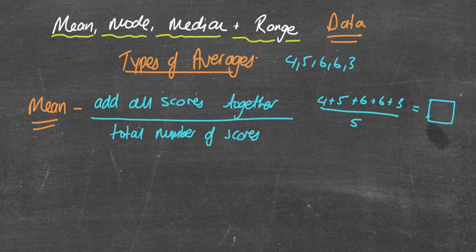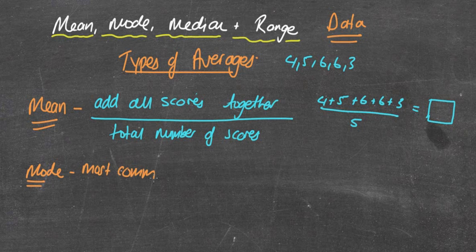But certainly these are all types of averages. The mode is the most common number. I've underlined the MO in mode because if you think about mode and most, they have the same two first letters. In this case, 6 would be the most common number.